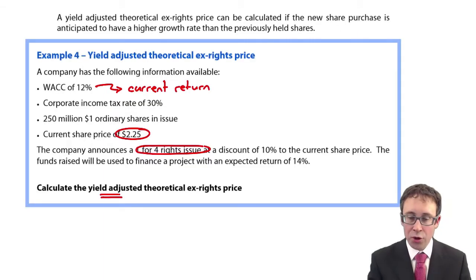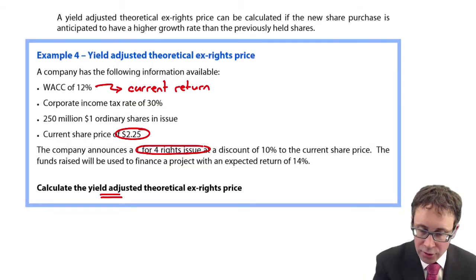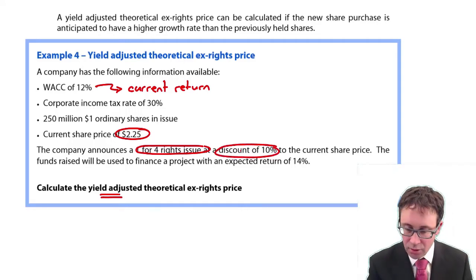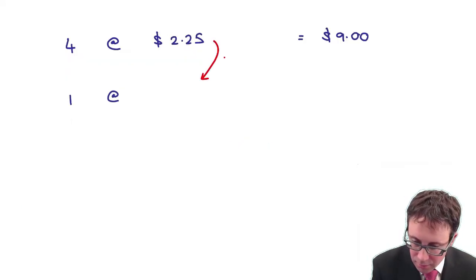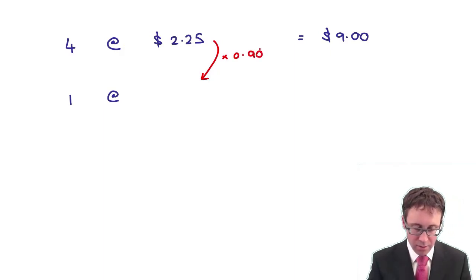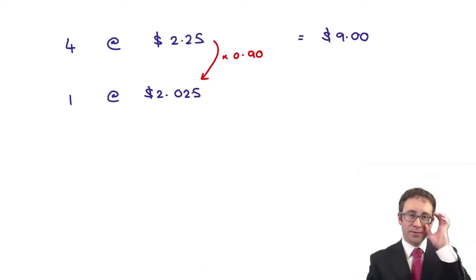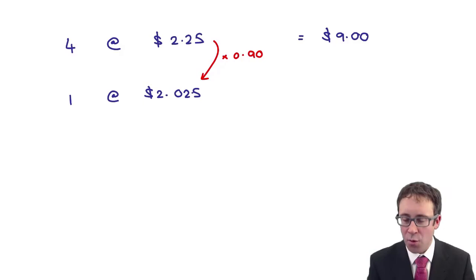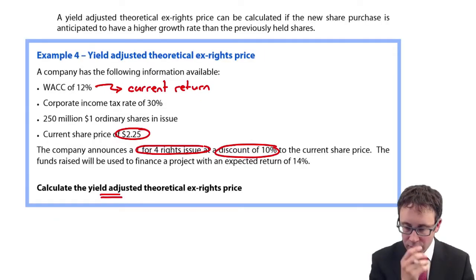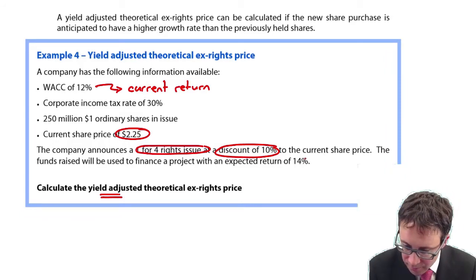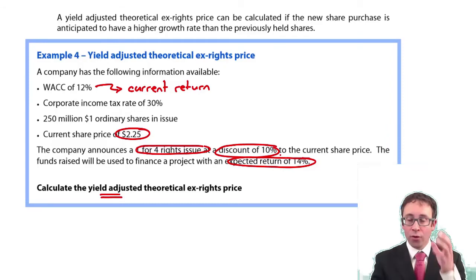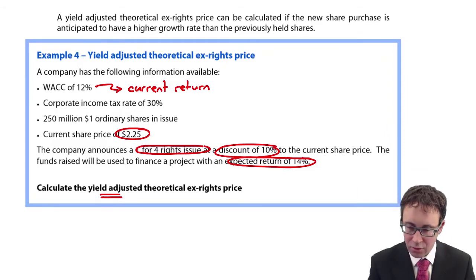How much are we going to pay for the new shares? Well, the new shares are at a discount amount of 10% to the current share price. So that will be 90% of the current share price. So that is $2.025. I'll leave it like that for the time being. What else are we told? It says the funds raised will be used to finance a project with an expected return of 14%, and that 14% is higher than the current return.